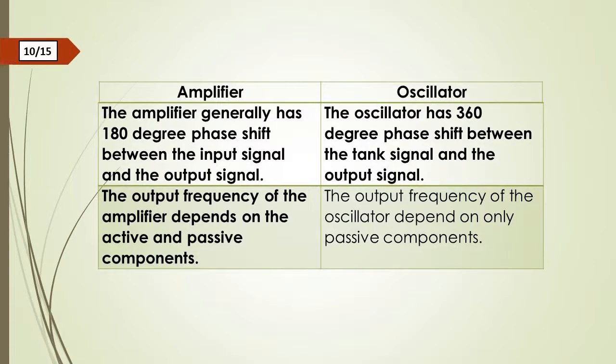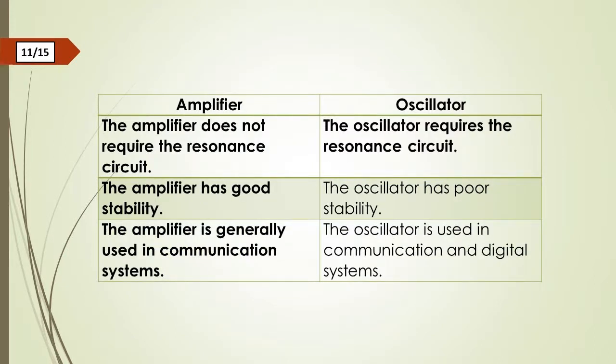The amplifier generally has 180 degree phase shift between the input signal and the output signal. The output frequency of the amplifier depends on the active and passive components. The output frequency of the oscillator depends on only passive components. The amplifier does not require the resonant circuit. The oscillator requires the resonant circuit.